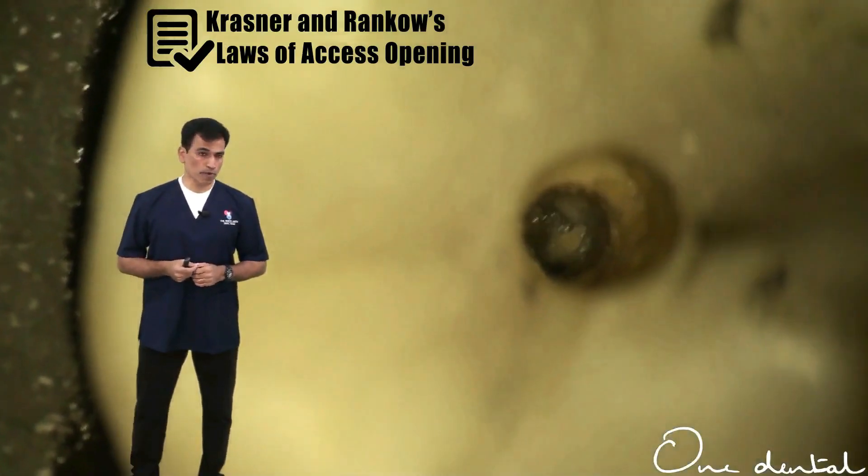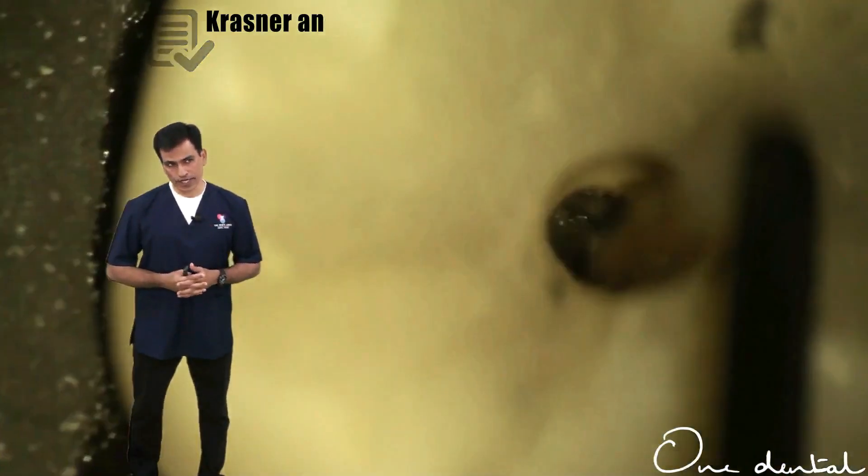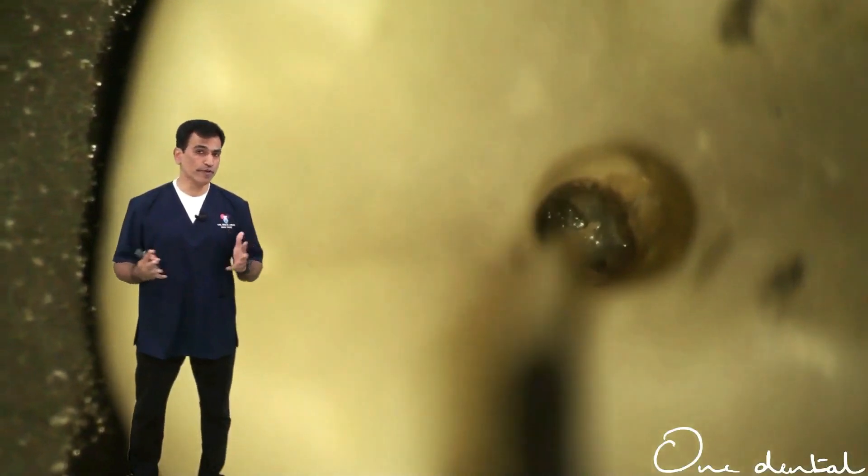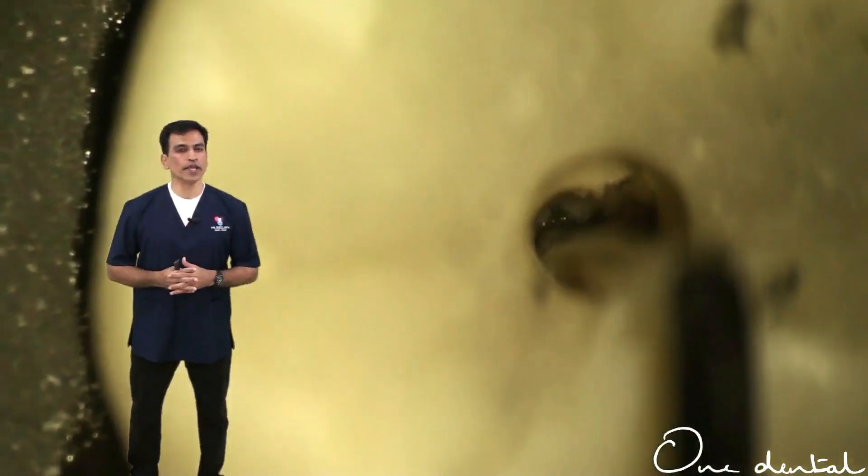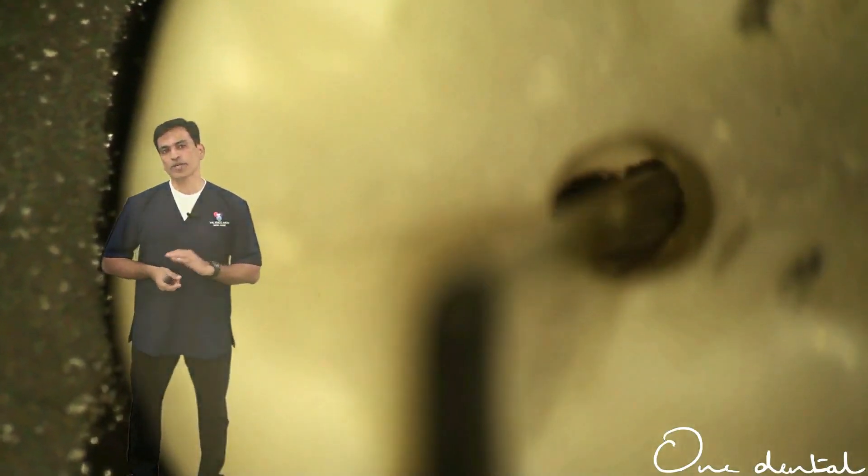To use a DG16 probe, one of the must-haves in endodontics, it's a long straight probe with two different angles. Try and negotiate and try and remove the contents that are in the root canal system.